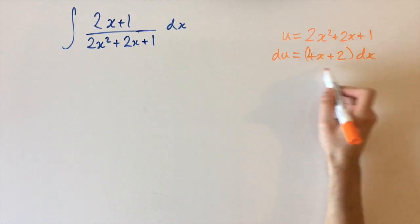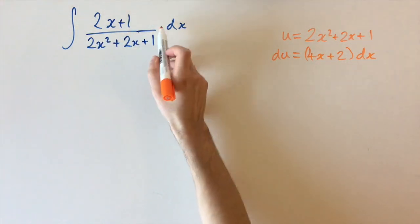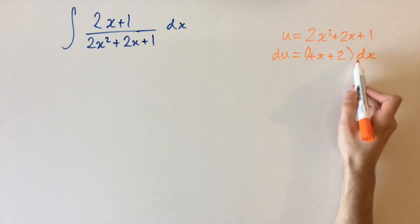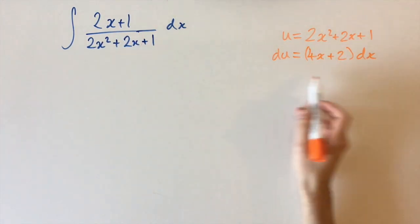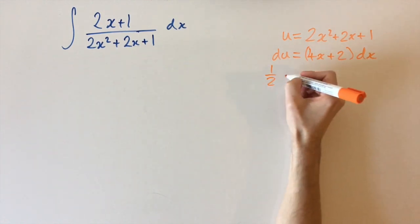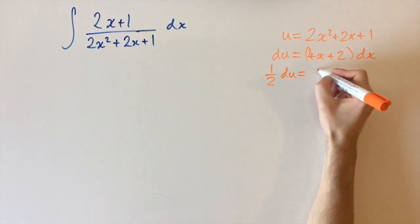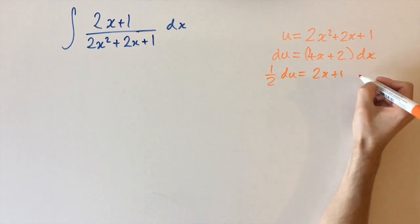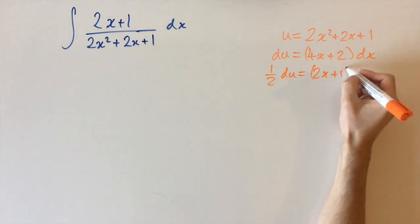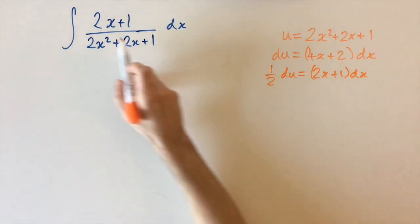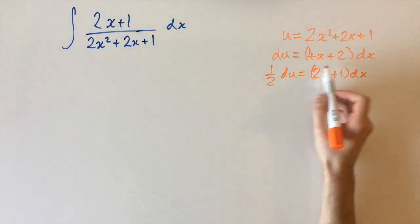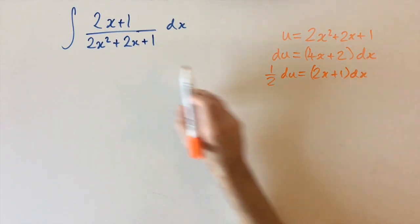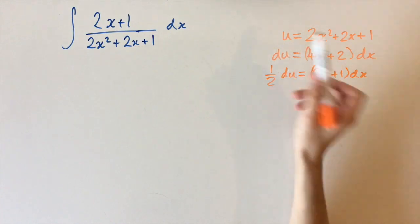We want to express this in terms of the numerator, and we actually see this is exactly twice the numerator, so we're just going to divide both sides by 2 and we have a half du equals 2x plus 1 dx. This is really nice because we can just group the top two terms and replace them by a half du, and then the denominator just is replaced by u.